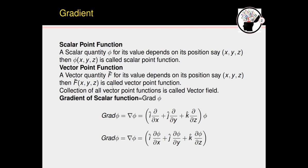The gradient of a scalar function is a differential operator. We denote it as grad(phi) or del(phi). This del is a vector differential operator, defined as: del = i(∂/∂x) + j(∂/∂y) + k(∂/∂z). Since it is a vector differential operator, it is expressed in terms of i, j, k vectors. In ordinary derivatives we write d/dx; here only the operator form changes.